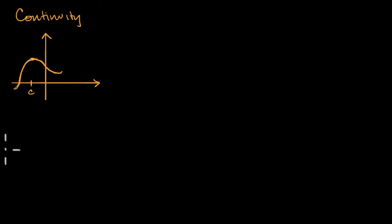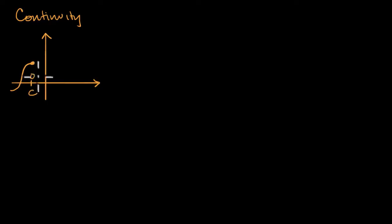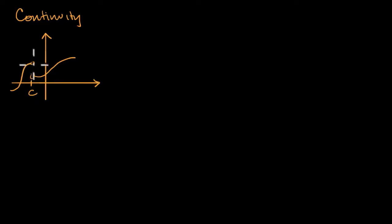But if I had a function that looked somewhat different — if it was defined up until a certain point and then there's a bit of a jump — this function would be very hard to draw going through x = c without picking up my pen. I would have to pick it up and move back down here, and so that is an intuitive sense that we are not continuous in this case. But let's actually come up with a formal definition for continuity and then see if it feels intuitive.